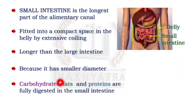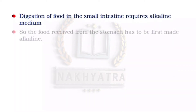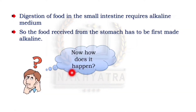Carbohydrates, fats, and proteins are fully digested in the small intestine — try to keep these three things in mind. Digestion of food in the small intestine requires an alkaline medium. So the food received from the stomach has to be first made alkaline. Let us see how that happens.